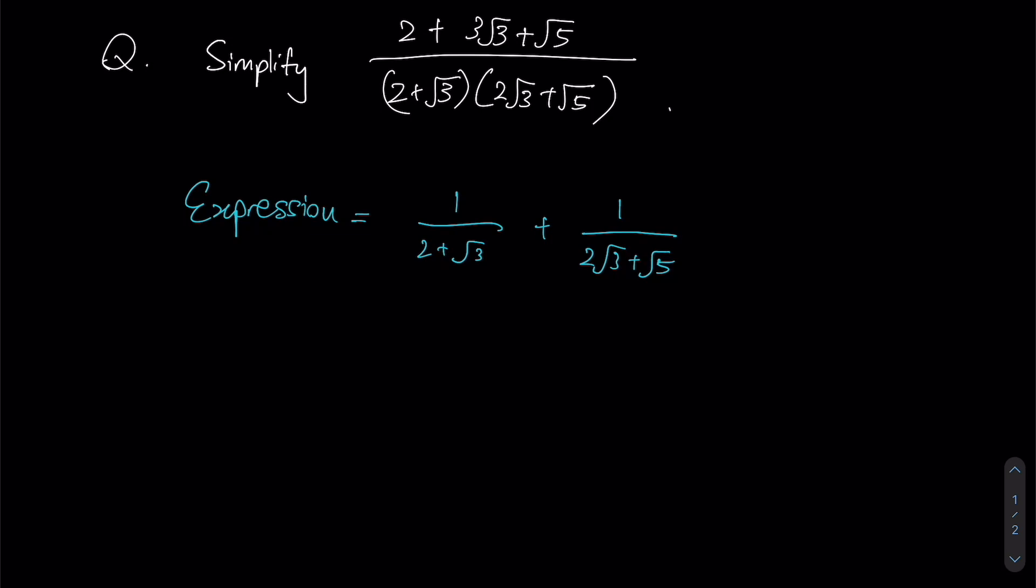we now need to observe that we have what we call surd expressions, which are basically expressions involving square roots within our denominator. All right, so this over here is undesirable. We usually tend to deal with surds only in our numerator. Okay, so we want to avoid this form altogether. So how do we get rid of these square roots?